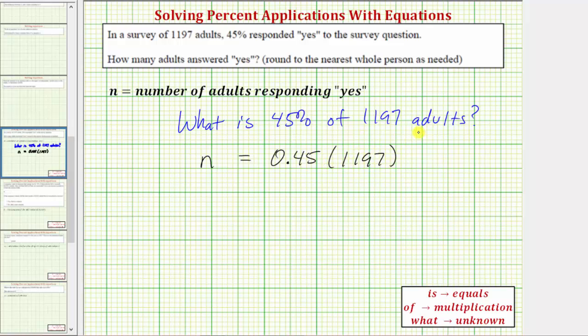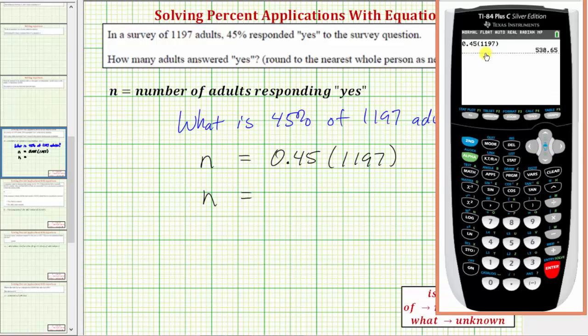Notice how to find the percent of a number, we convert the percent to a decimal and multiply. And now we'll find this product on the calculator. 0.45 times 1,197 is 538.65.